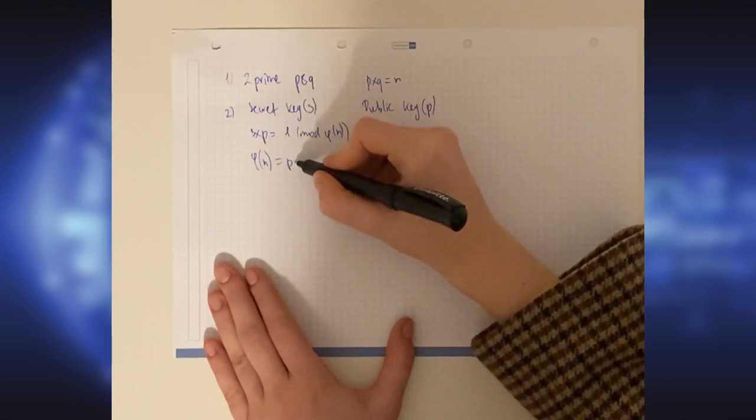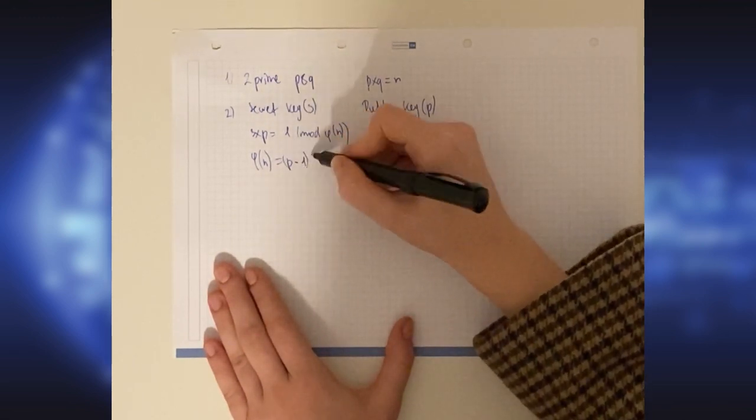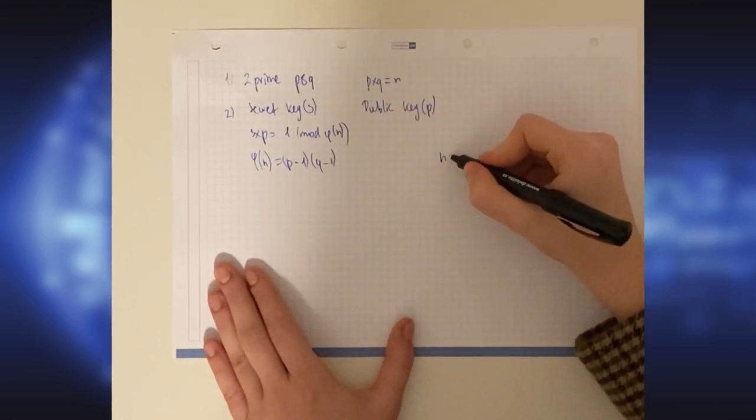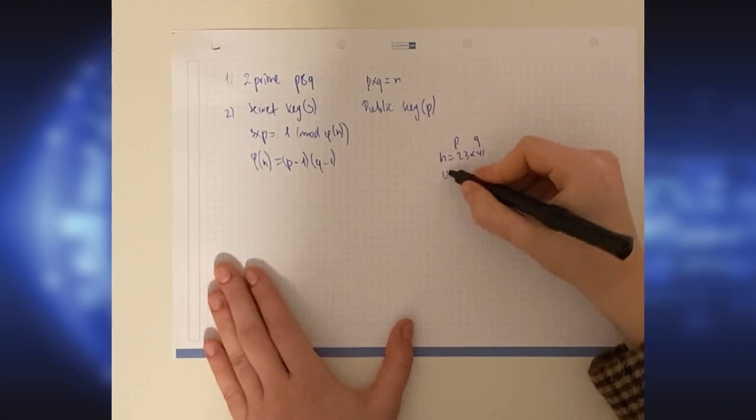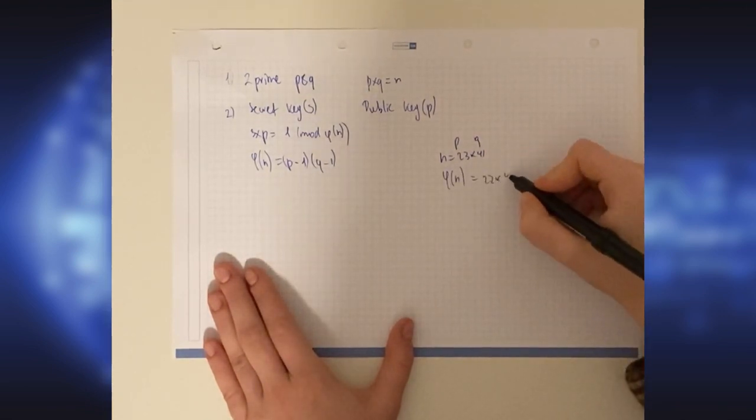In this case, phi of N equals P minus 1 times Q minus 1. For example, if N equals 23 times 41, where this is P and this is Q, then phi of N equals 22 times 40.